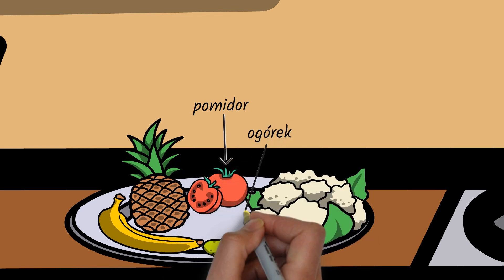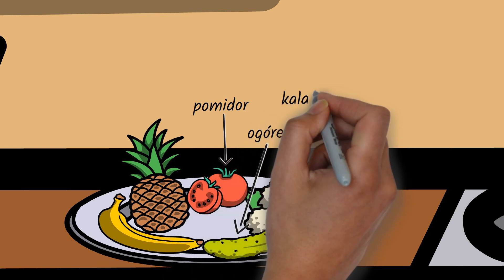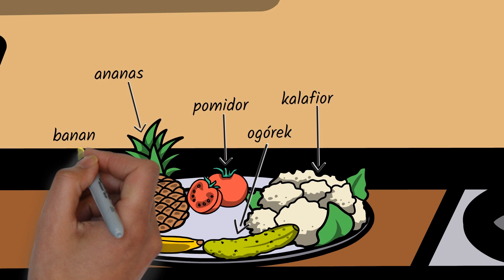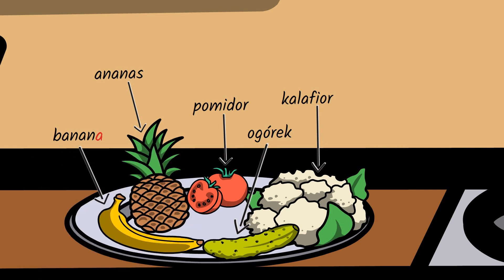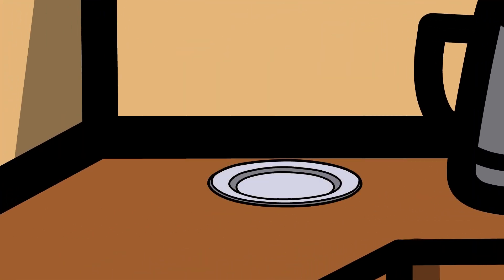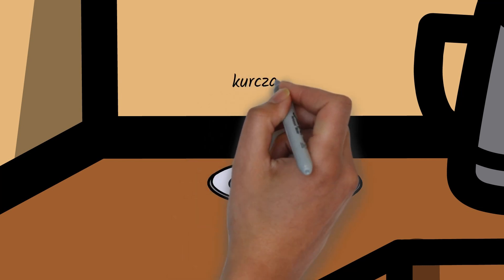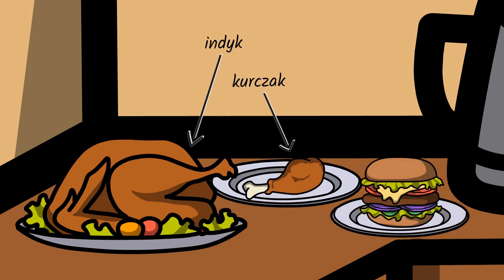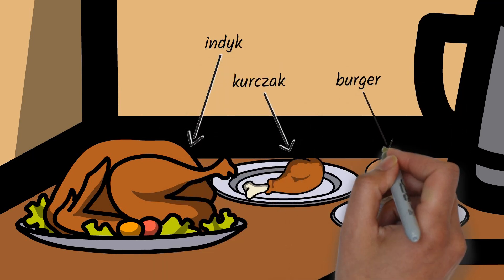Mam pomidora, ogórka, kalafiora, ananasa, banana. Interestingly, in many cases adding the -a suffix is actually optional. The situation seems clearest when it comes to names based on animals, such as kurczak or indyk. The same applies to dishes based on meat or fish.